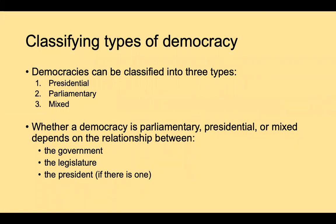In comparative politics, a lot of what we do relates to classifying different types. When we observe variation in the world, we often observe different kinds of variation — different types of transitions or types of regimes. Democratic governments also take different forms. We distinguish between three types of democracies, specifically in terms of the relationship between the government, the legislature, and the president. These are the key authoritative institutions of the democratic polity.